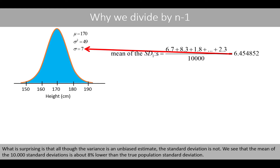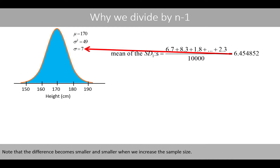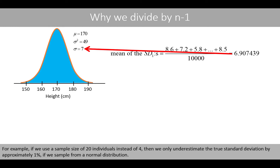What is surprising is that although the variance is an unbiased estimate, the standard deviation is not. We see that the mean of the 10,000 standard deviations is about 8% lower than the true population standard deviation. Note that the difference becomes smaller when we increase the sample size. For example, if we use a sample size of 20 individuals instead of 4, we only underestimate the true standard deviation by approximately 1% when sampling from a normal distribution.